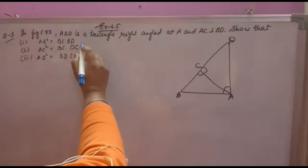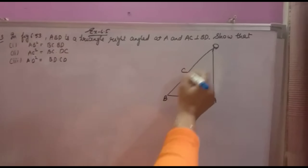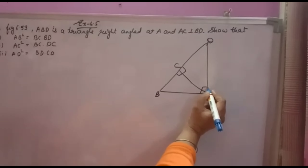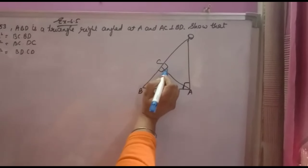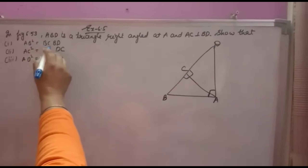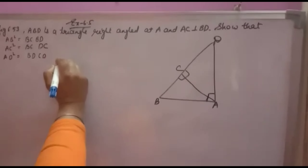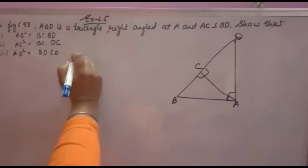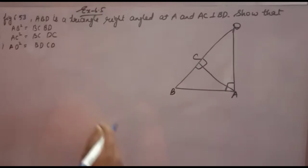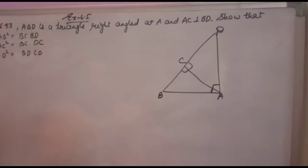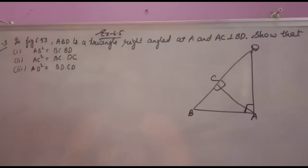In figure 6.53, ABD is a triangle right-angled at A, AC is perpendicular to BD. You have to show that AB² is equal to BC into BD. It is given that ABD is a right angle triangle at A and AC is perpendicular to BD, and you have to prove that AB² is equal to BC into BD.